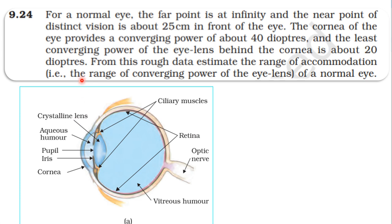From the NCERT textbook, from the topic Ray Optics and Optical Instruments, learn example 9.24. For a normal eye, the far point is at infinity and the near point of distinct vision is about 25 cm in front of the eye. The cornea provides a converging power of about 40 diopters and the least converging power of the eye lens behind the cornea is about 20 diopters. Estimate the range of accommodation of the eye lens of a normal eye.